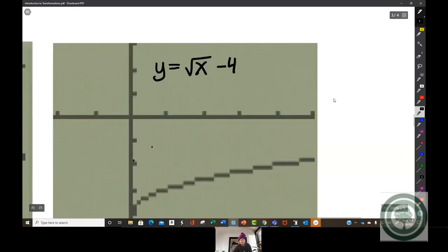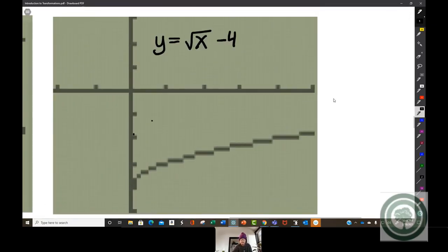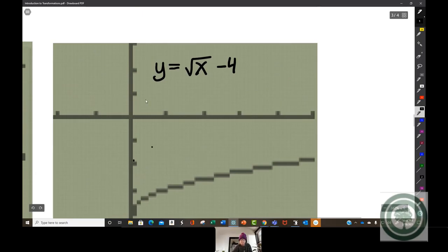Here we have a vertical shift down four units. And so we took the basic graph of the square root function and just physically moved it down four units. With a few little extra marks. Oh, I can't get rid of them now. But this is a vertical shift down.